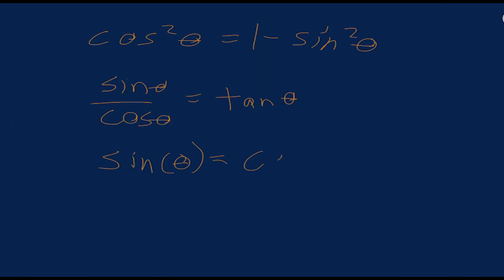Next up, I just wanted to quickly mention a couple of trig rules that come up occasionally on the SAT. One is that cosine squared theta equals 1 minus sine squared theta. Another is that sine over cosine equals tangent. And finally, one that I mentioned earlier, sine of theta equals cosine of 90 minus theta. The opposite is also true. So cosine of theta equals sine of 90 minus theta.